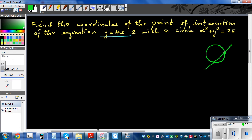So if they're intersecting, what we can do is we can in place of y put this. So let us write the equation of a circle first. The equation of a circle is x² + y² = 25. So in place of y I can put 4x minus 2.